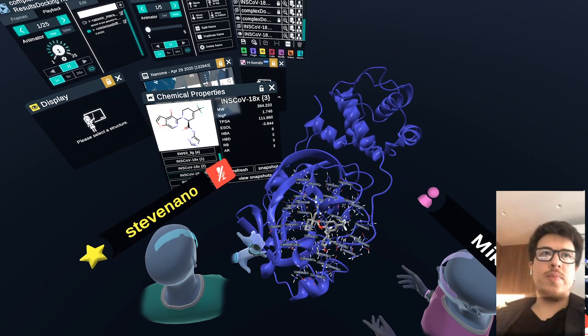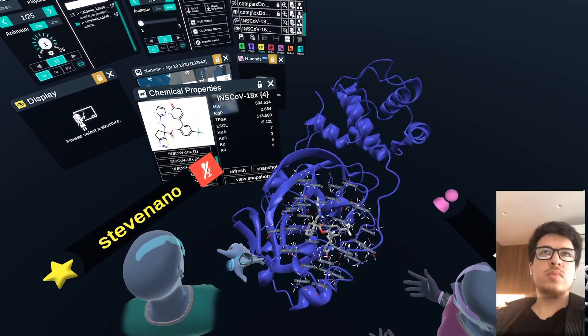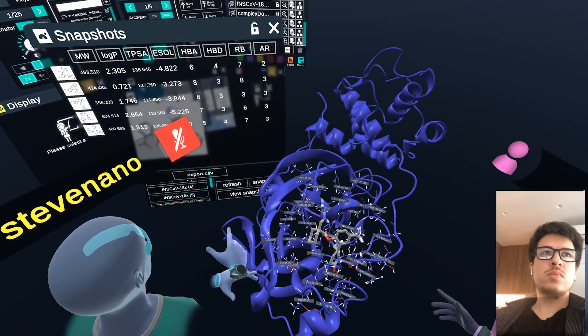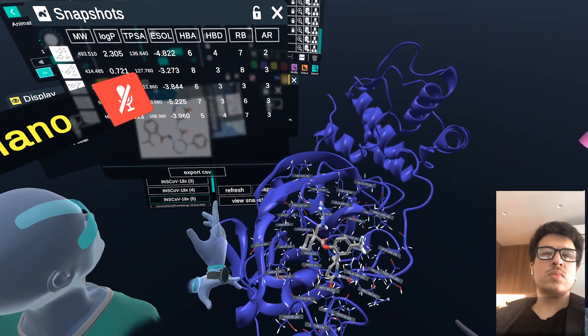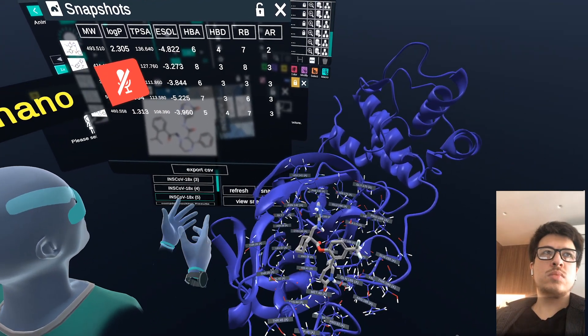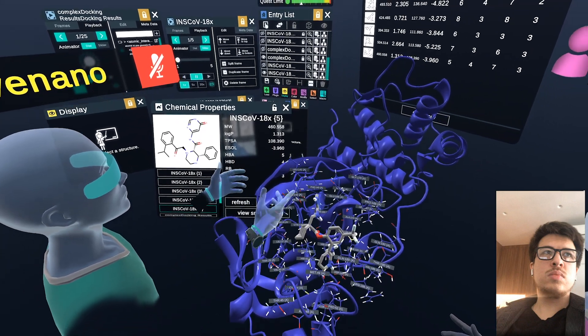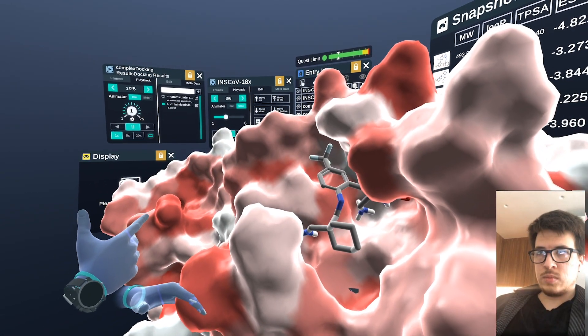Steve just pulled up a feature in Nanome where we can quickly look at some of the chemical properties of each one of these ligands and put them in one place. When we had looked at this, we noticed that they were between say 400 and 500 molecular weight, so we figured that you would put some constraint down there.